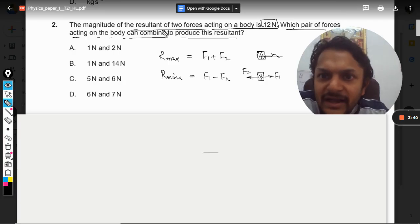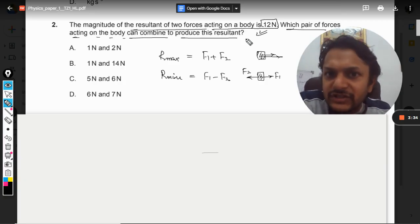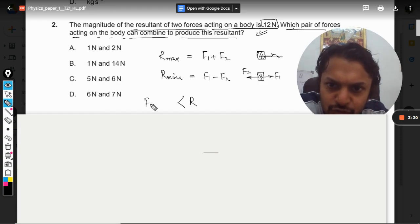So we want the magnitude of the resultant of two forces to be 12. So which pair can combine to produce the resultant? It means that the resultant has to lie in the range of F1 minus F2 to F1 plus F2.